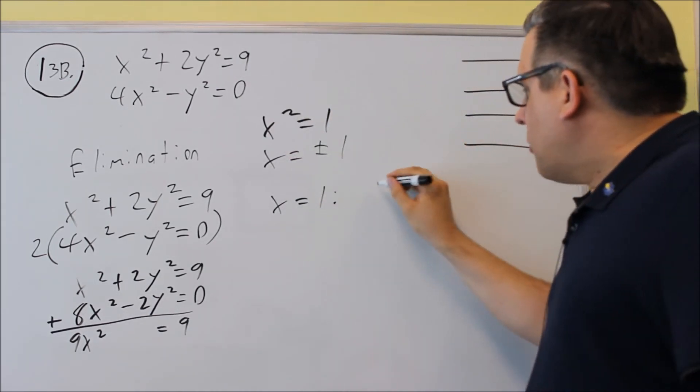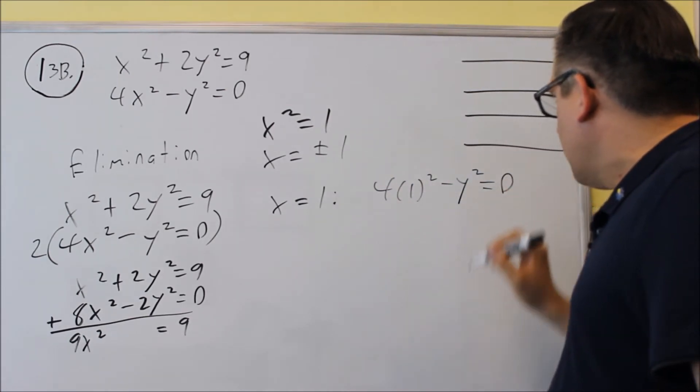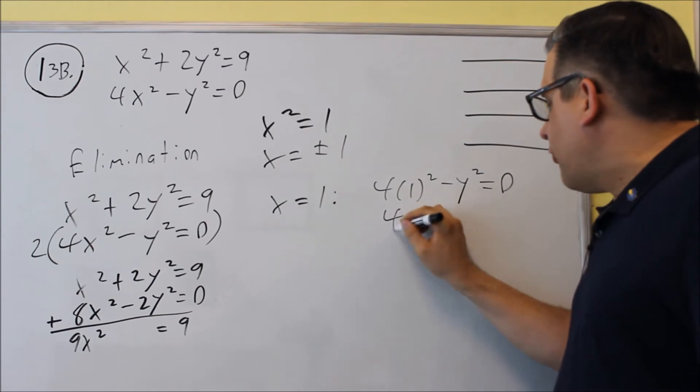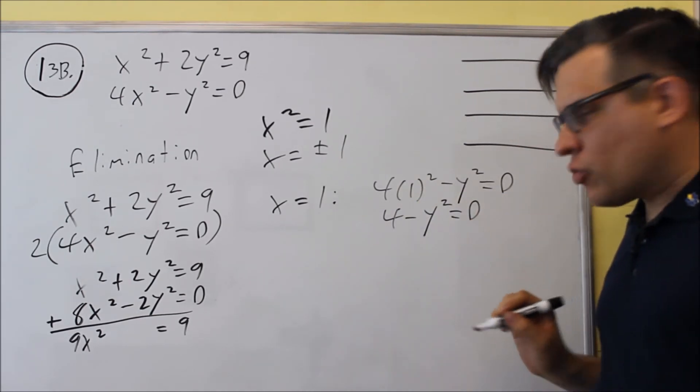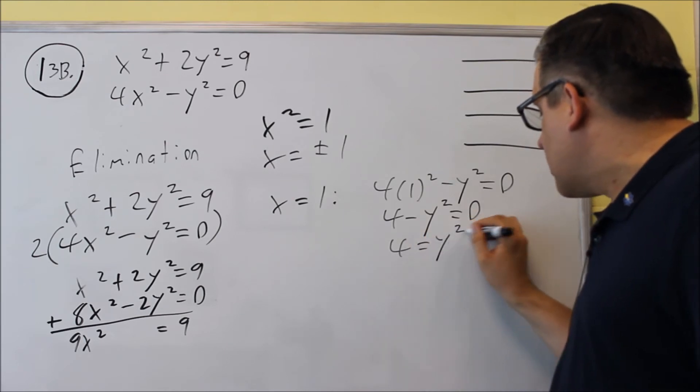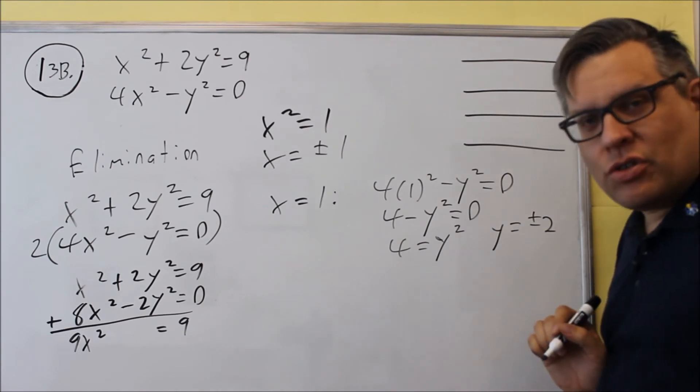When x is equal to one, I'm going to put that into here. So this will give us four minus y squared equals zero. And I can move the y squared over. I get four is equal to y squared. And by solving that, I get y is equal to plus or minus two.